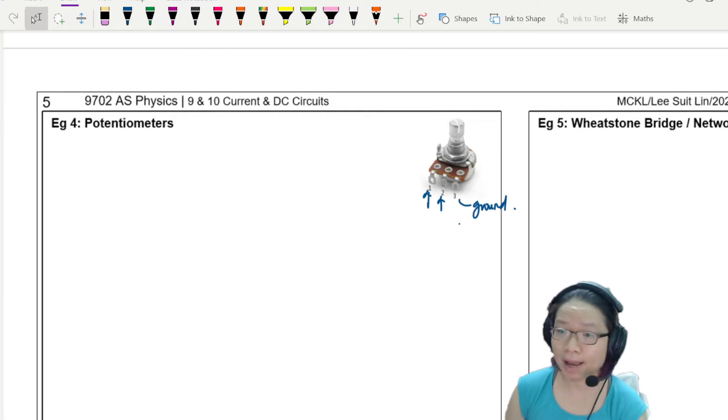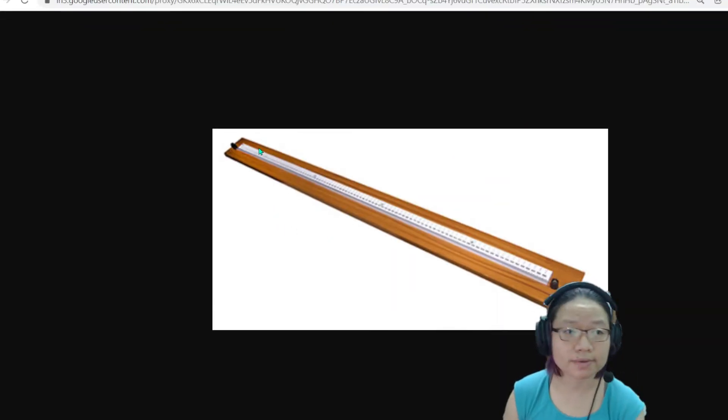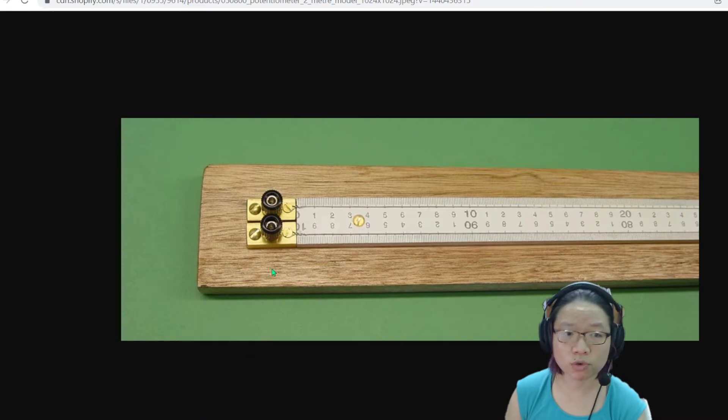But when you study this in the lab, your potentiometer does not look like this. It looks more like a wire on a ruler. So if you've done some labs before, you will know it looks like this. Here is a close-up for you if you want to look at it. So normally, what we'll do is we will screw in a wire along here or here.